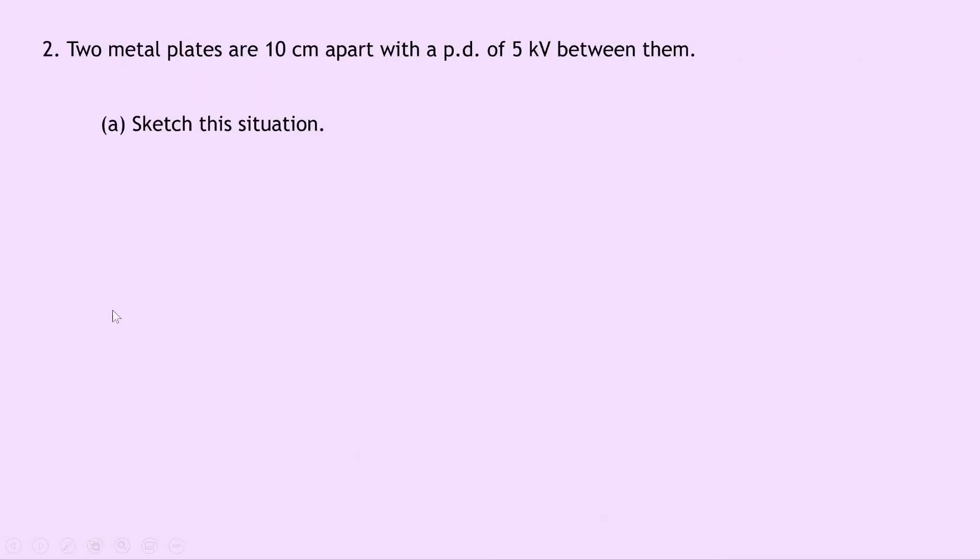Question two says that two metal plates are 10 centimetres apart with a potential difference of 5 kilovolts between them. Part A says to sketch this situation. Well, your sketch might look something like this. It doesn't matter which way round you have the positive and negative plates, as long as you show the field lines going from positive to negative. And we can label some things on our diagram here. So we've got the distance here being 10 centimetres, and the voltage or potential difference being 5,000 volts.